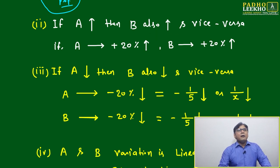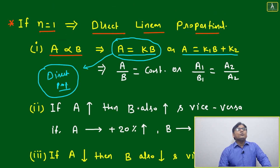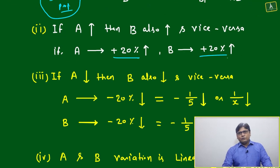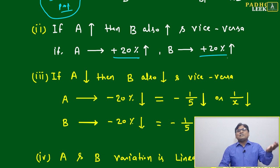But here it is very clear: A equal to k into B means if A will increase by 20 percent, B also will increase by 20 percent. No confusion because we are not dealing with any power of A, power of B, and we are not dealing with any other expression of the equation.